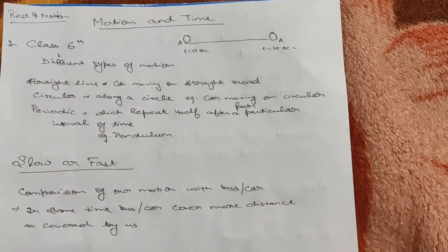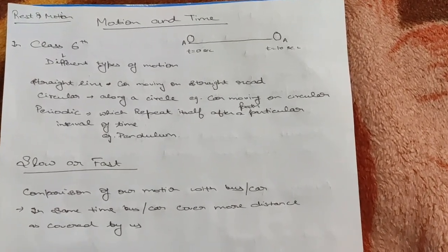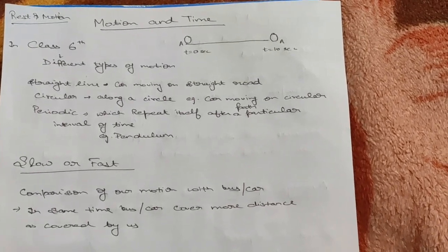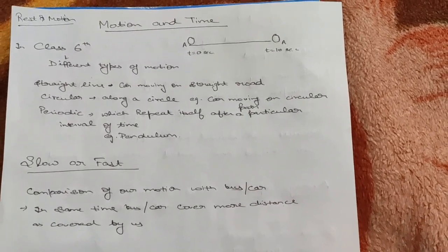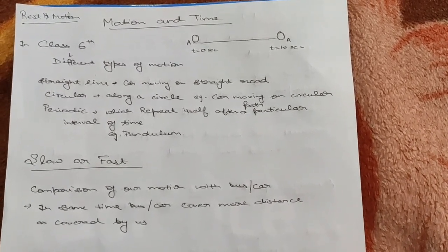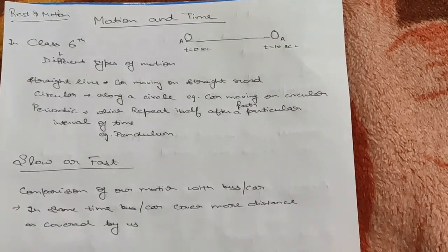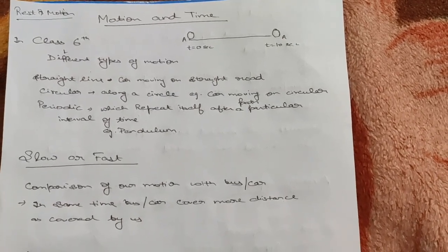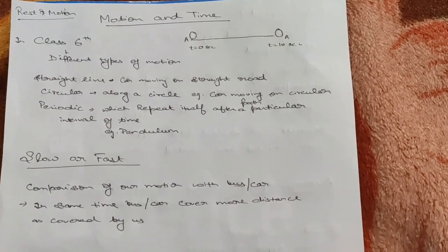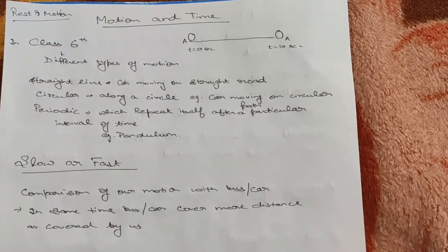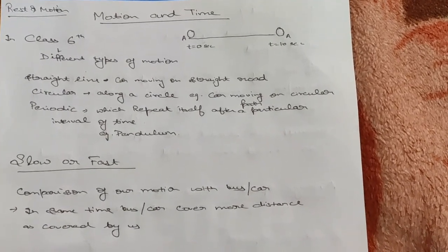Periodic motion is the motion that repeats itself after a particular interval of time. After every fixed interval of time, it will repeat the motion done in the first time period. For example, if an object performs a certain motion in the first 10 seconds, it will also perform the same motion in the next 10 seconds. A classic example of periodic motion is a pendulum.